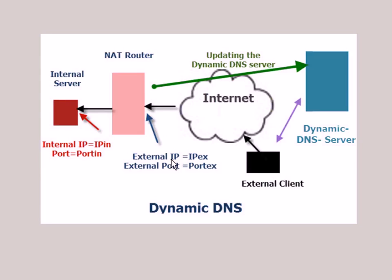The only problem is that this external IP address may — and often does — change. It's allocated by the ISP, and most ISPs use dynamic IP addresses for home connections. So you could give an external user the IP address of the NAT router, but it might work one day and not work the next because the IP address has changed. That's why you need a dynamic DNS server.